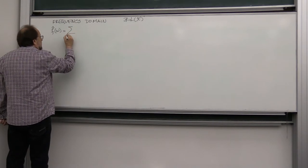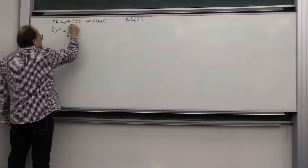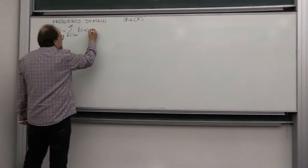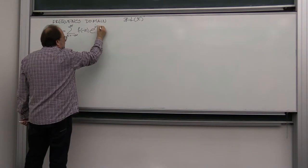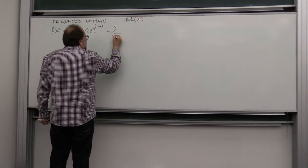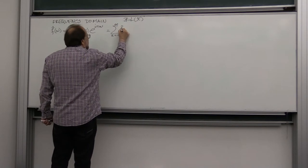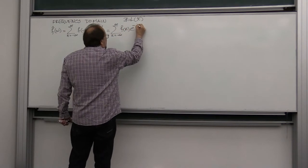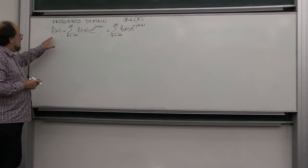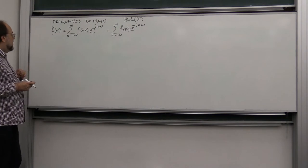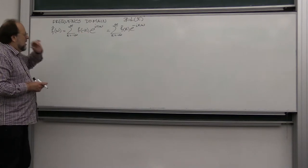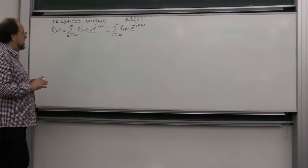As we saw last time, the values of the Fourier series coefficients are just the values at integers, and the base functions are complex exponentials. You can write this as the sum from k equals minus infinity to infinity of f(k) times e to the minus i k omega. So there is no time here — it's only the frequency content of the signal. And it just happens that the coefficients of the Fourier series are just the samples of the signal from the time domain.